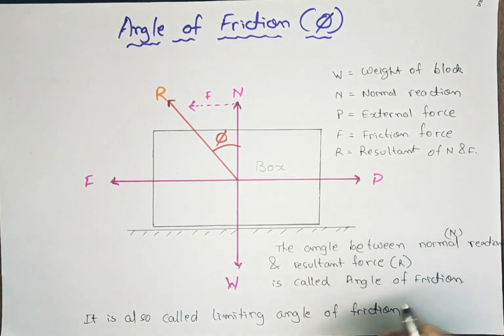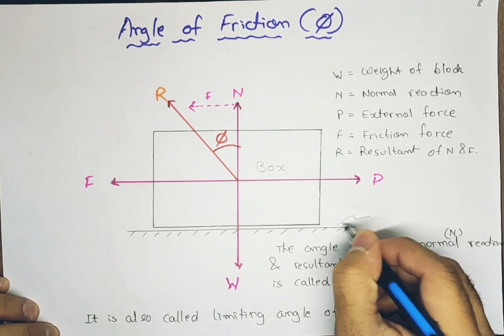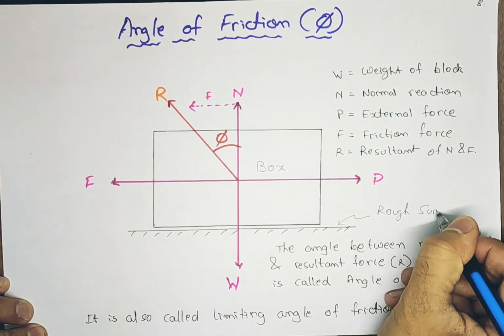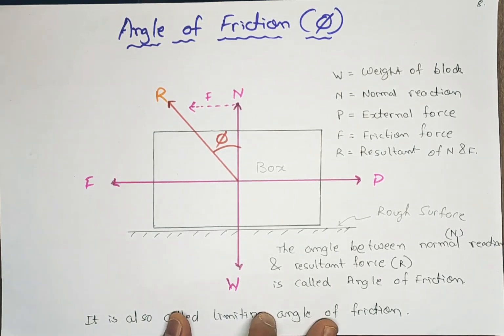Suppose if we consider a box lying on a rough surface. So this is a box and this is a rough surface.